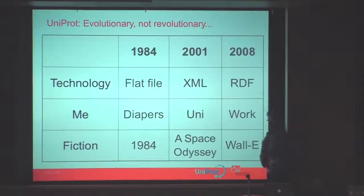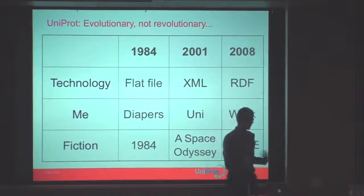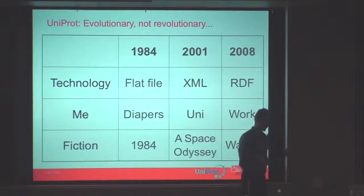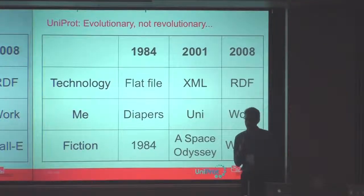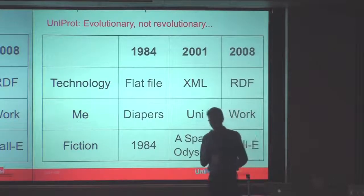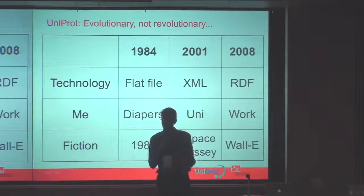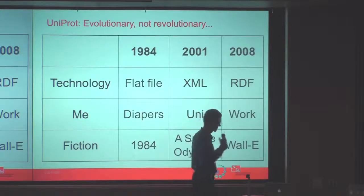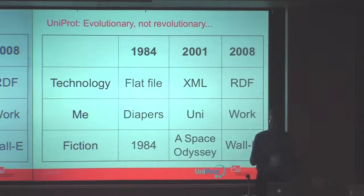Technology moves on, and you end up in 2001 — I go to university. Everybody is using XML technologies for their databases. And I don't know if you read the book 2001: A Space Odyssey, where you have this monolithic technology which really helps the evolution of your system, but at the end the big monolith tries to kill you because it gets too big.